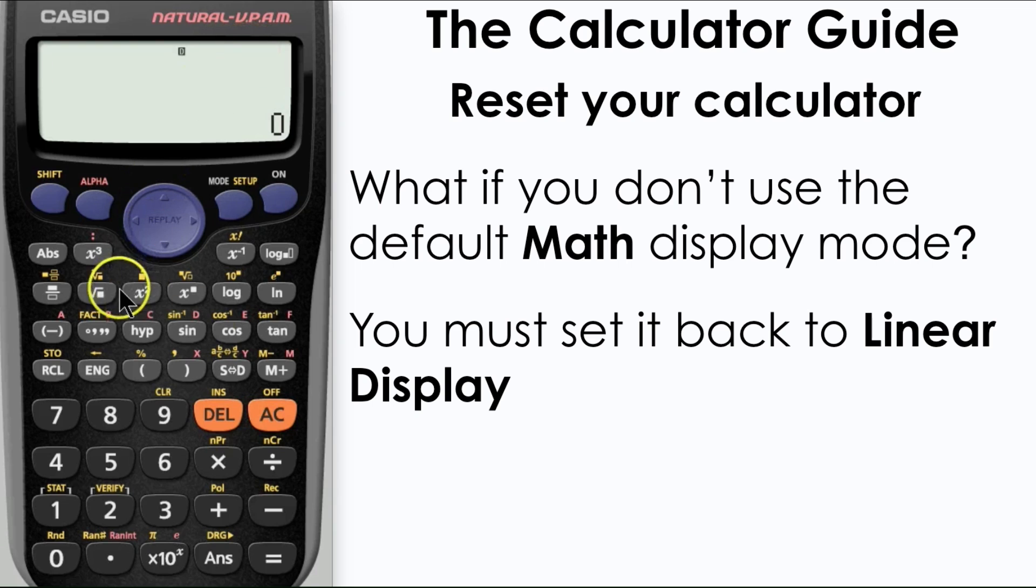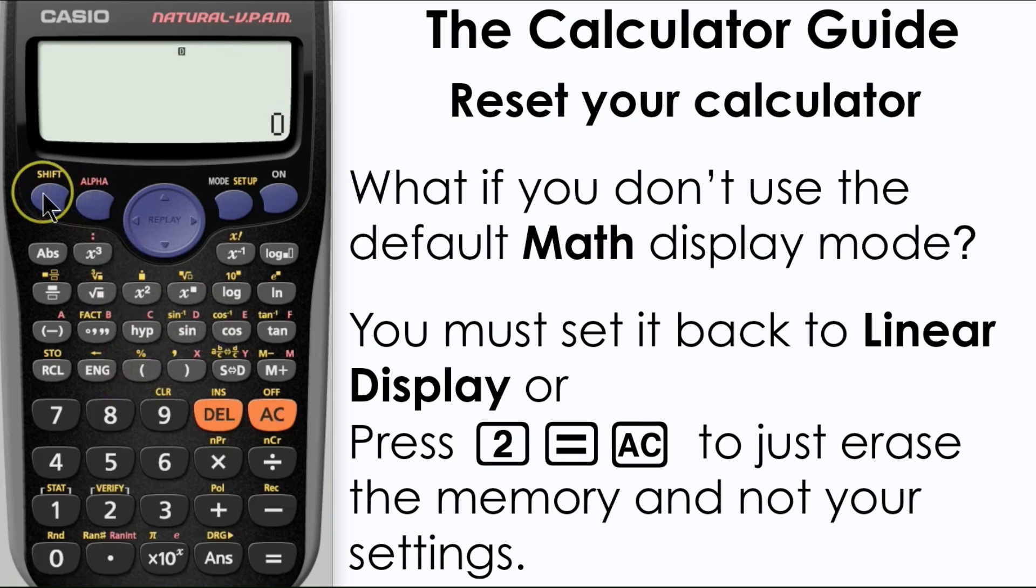Alternatively, what you can do is when you go to the clear menu, rather than Clear All, we notice that we've got two other choices here: Setup and Memory. Well, we don't want to alter the setup because that's what puts us in the linear mode. We just want to clear the memory of any saved formulas or notes or anything like that.